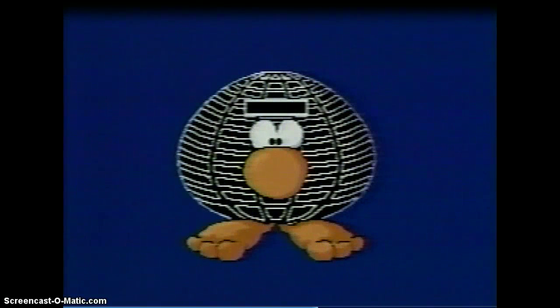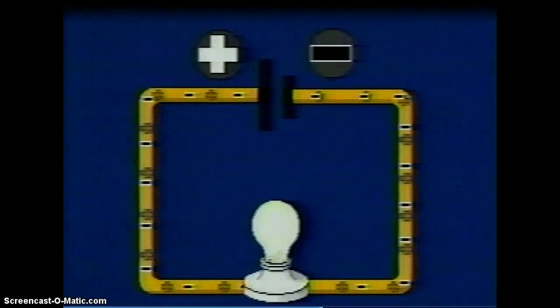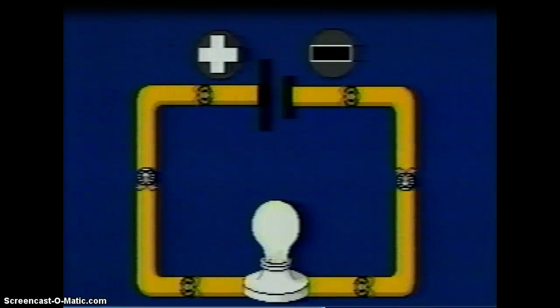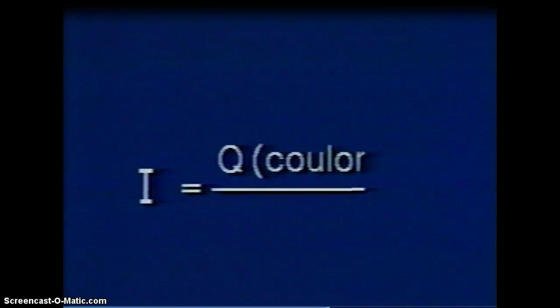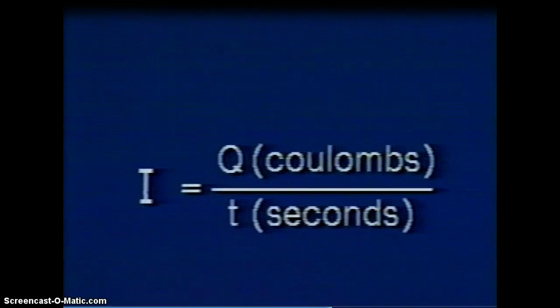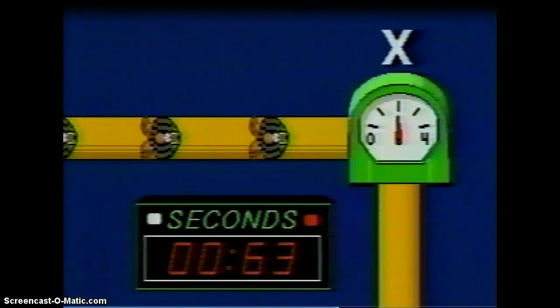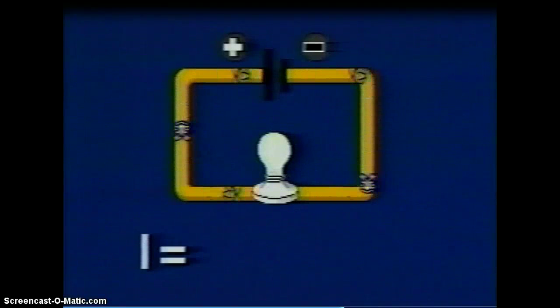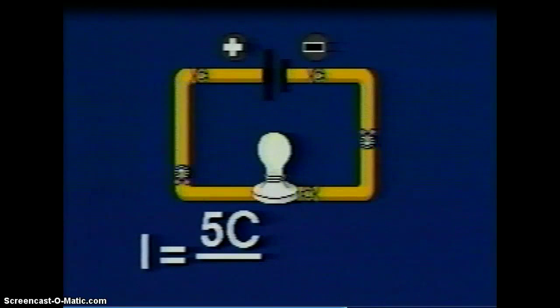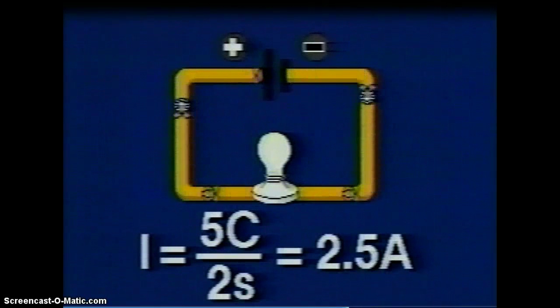It's difficult to visualize a group of electrons, so let's have this critter represent one coulomb of charge. Instead of picturing our circuit like this, we can visualize it like this. Now we can calculate current by dividing the charge in coulombs by the time in seconds. Coulombs per second are called amperes. If in our circuit 5 coulombs pass by point X in 2 seconds, we can calculate the current by dividing the charge of 5 coulombs by the time 2 seconds to give us 2.5 amperes.